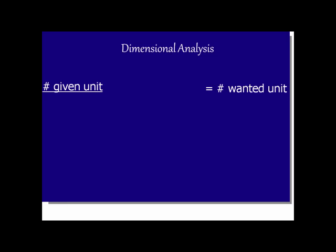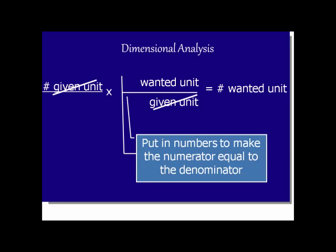Now how we get from the given unit to the wanted unit is the term we looked at earlier, which is the conversion factor. So we're always multiplying by a conversion factor. Conversion factors always have a numerator and a denominator. And we know that I need the given unit to cancel, so it is going to go in the denominator. And I want my final answer to have a specific unit and that's going to go in the numerator. And here we can see that the given unit cancels. And we're going to plug in numbers into that conversion factor that are going to make the numerator equal to the denominator.